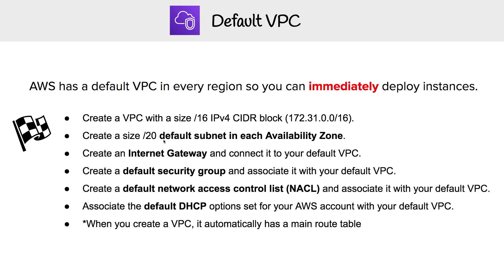It's going to create an internet gateway and connect it to your default VPC, which means that our EC2 instances can reach the internet. It's also going to come with a default security group associated with your default VPC, so if you launch an EC2 instance, it will automatically default to that security group unless you override it.